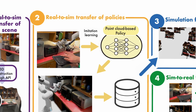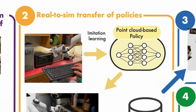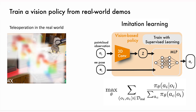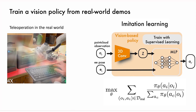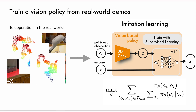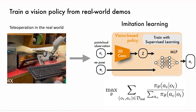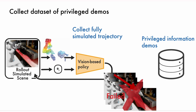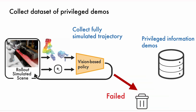The next step of Rialto consists in bringing a few real-world demonstrations into the simulation. We do so with an inverse distillation procedure, where we first train a vision-based policy from real-world demonstrations and second, we roll out this policy in simulation to collect a set of privileged demonstrations.